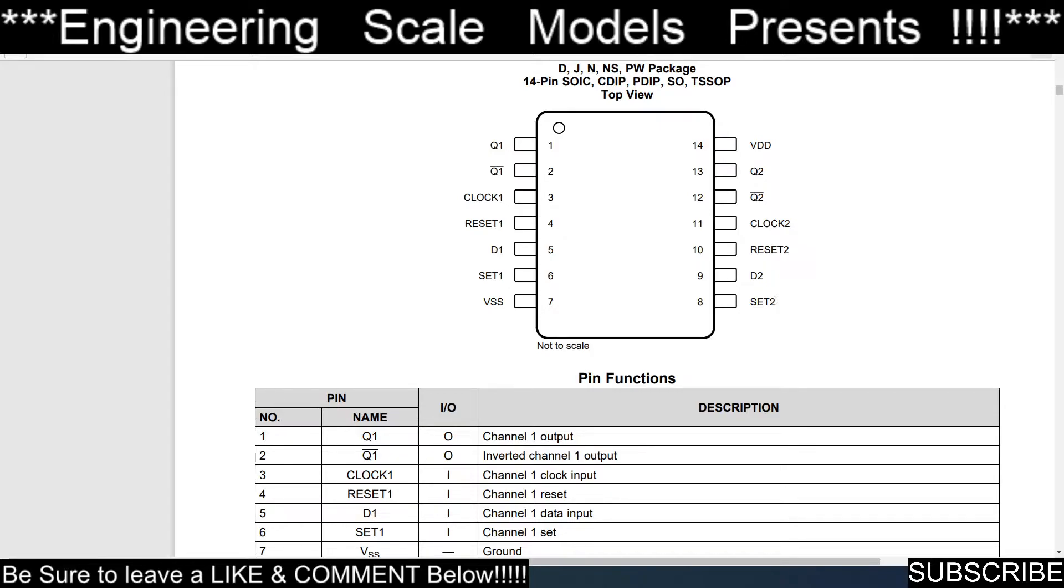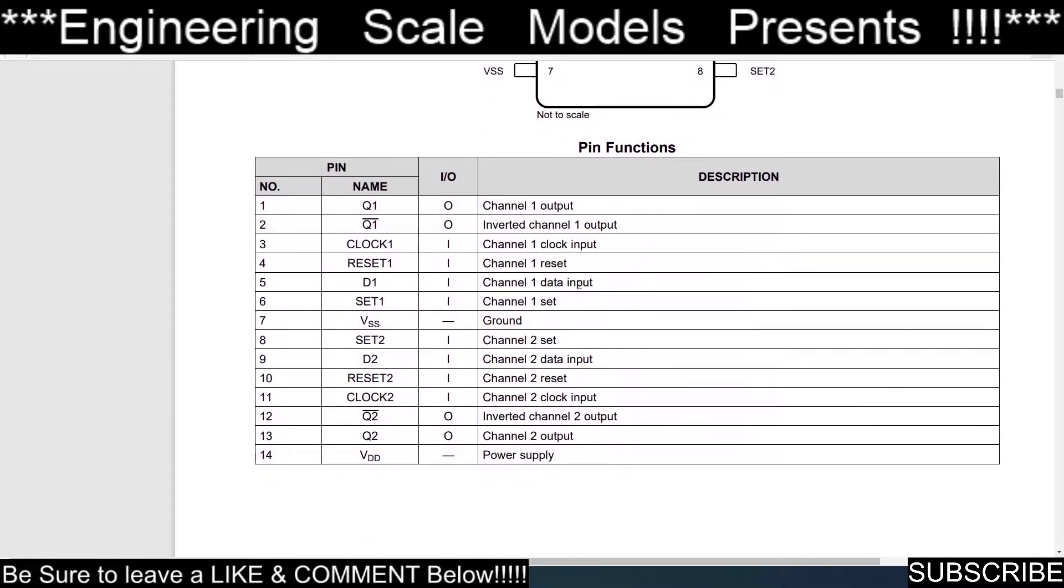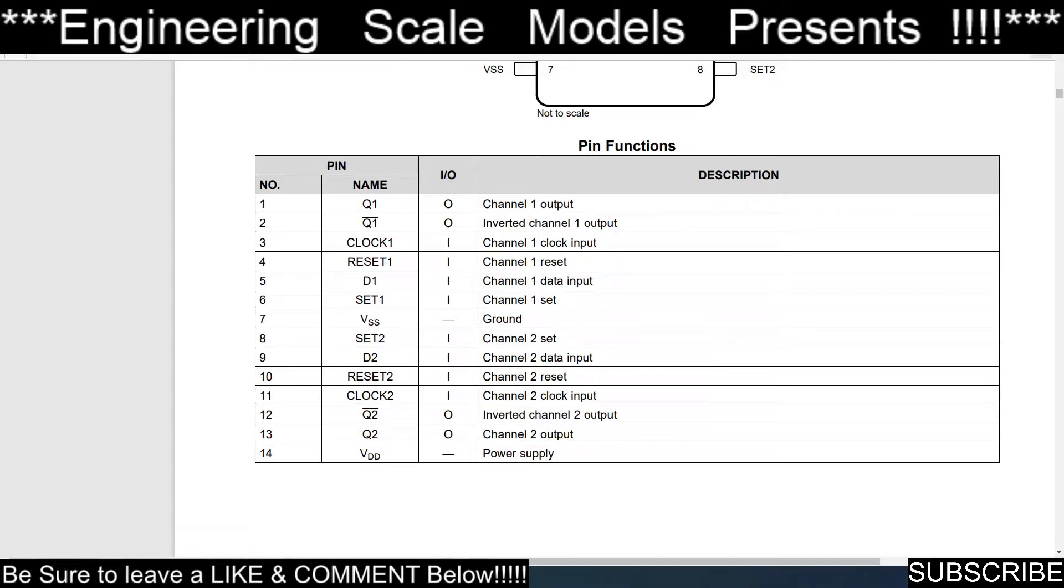Then you have the same thing over here: Q2, inverse of Q2, clock two, reset, D2, and set two. So there's your two things. And then it explains what each one is: channel one output, inverted channel one output, clock input, reset, data, and set. Then you have VSS is ground and VDD is your power supply.